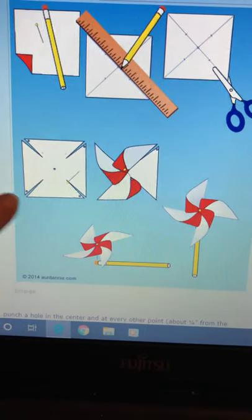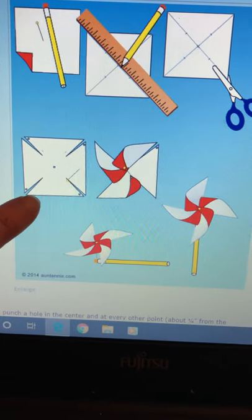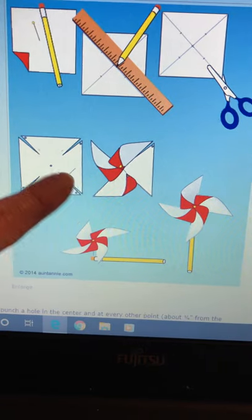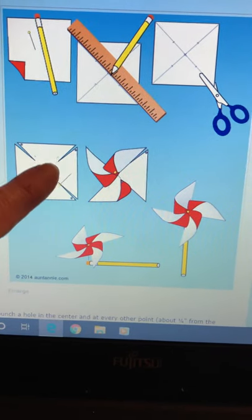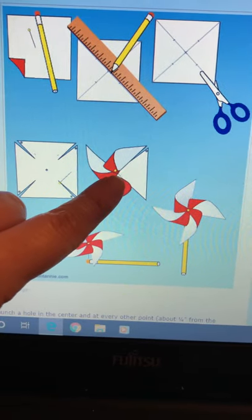When you have done that, take each corner and fold it into the middle. You don't need to do both, just one. So choose which one you want to fold and go all the way around and secure it with a pin.